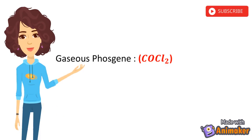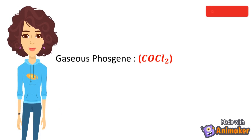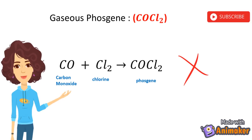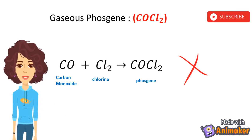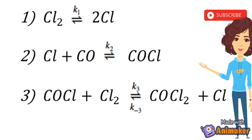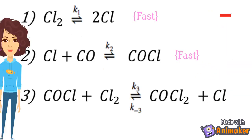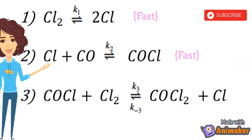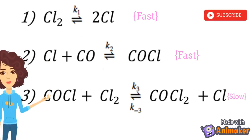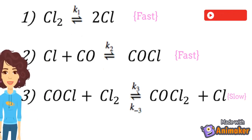The formation of gaseous phosgene, that is COCl2, from carbon monoxide and chlorine gas does not proceed as it would appear from the overall stoichiometry by a simple elementary reaction. Instead, the following mechanism is proposed where the first and second reactions are fast, and the third reaction is slow, which is the rate-determining step.